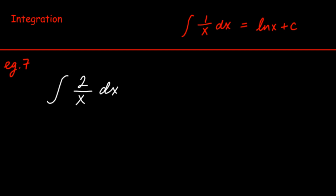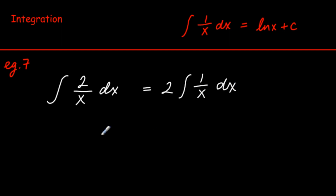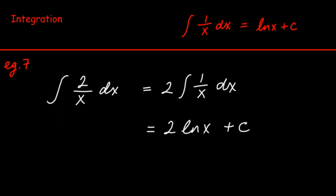Example 7: the log tables tell us that the integral of 1/x dx is the natural log of x plus C. In this case we can take the multiplier 2 outside of the integral, so we're integrating 1/x dx, giving us 2 ln(x) + C.